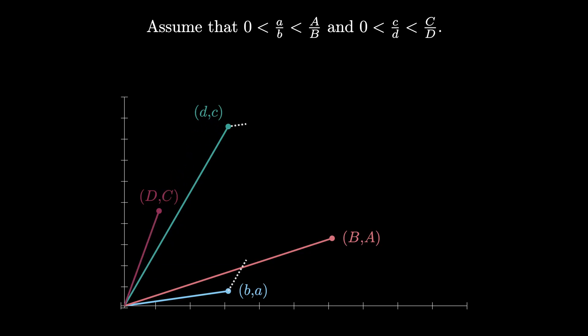But now we can think of these as vectors, and we see that the vector sum of (b,a) and (d,c) is (b+d, a+c). Moreover, the sum of (B,A) and (D,C) is (B+D, A+C). But notice that in this case, the slope of the line connecting the origin to (B+D, A+C) is less steep than the one connecting the origin to (b+d, a+c) as shown.